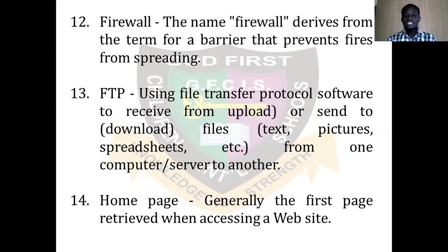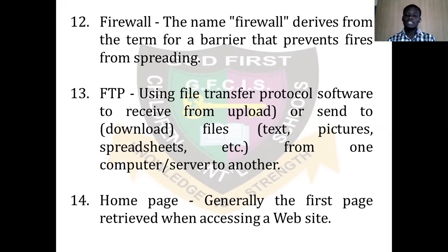Number thirteen is FTP — File Transfer Protocol. It is software used to receive, upload, or send files, text, and pictures from one computer to another. That particular thing that allows you to move files from one location to another over the internet is called FTP — the File Transfer Protocol. The files it moves can be audio, video, text, or pictures — any form of data over the internet. FTP allows you to move files from one point to another over the internet.